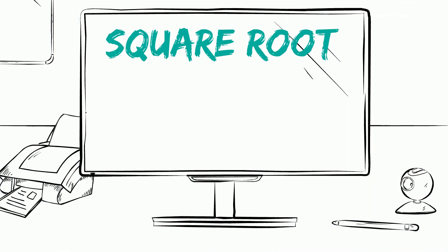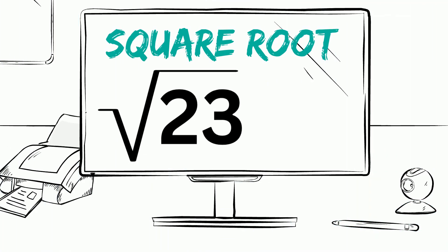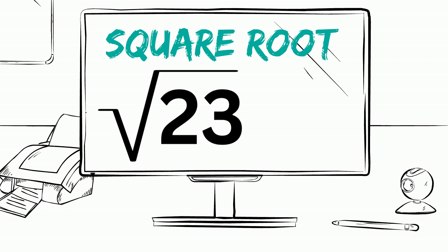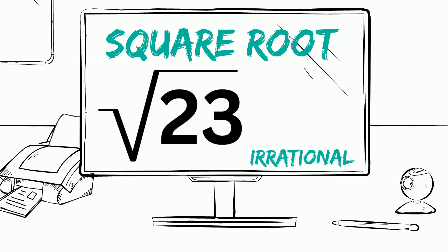Let's take a look at the square root of 23. The square root of 23 is not a perfect square. Therefore, it is an irrational number.